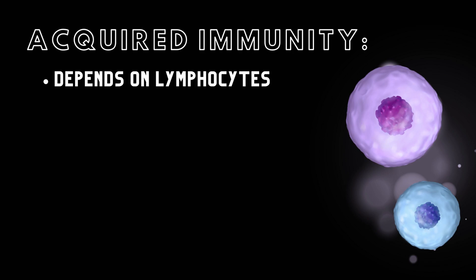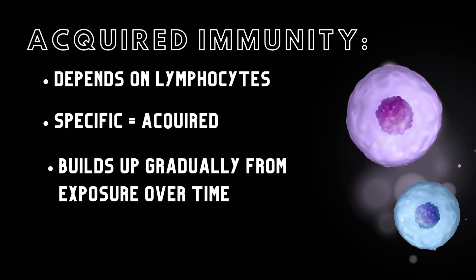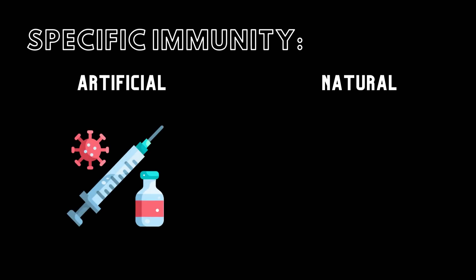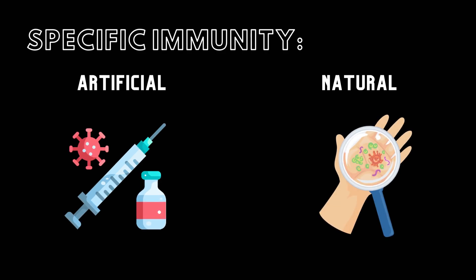Lymphocytes bear the responsibility of specific immunity, also known as acquired immunity. Acquired immunity develops gradually through exposure to pathogens, meaning it is not present at birth. Specific immunity comes in two forms: artificial and natural. Artificial immunity is acquired through vaccinations, whereas natural immunity is the result of ordinary daily encounters with disease-causing agents and pathogens.